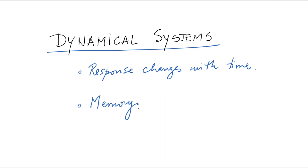Let's talk about what is a dynamical system. A dynamical system is a system that has a response that changes with time, but not only that, it also has a memory, which basically means that the response at future times depend on the response at present time and possibly past times as well.